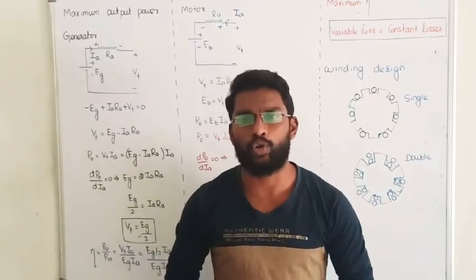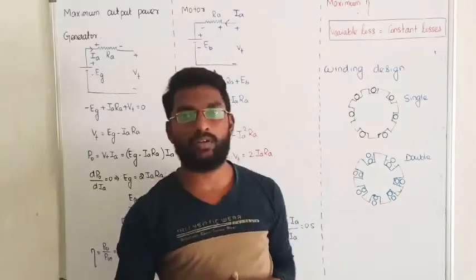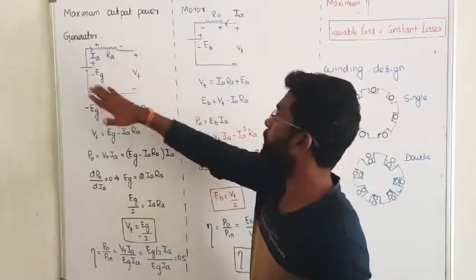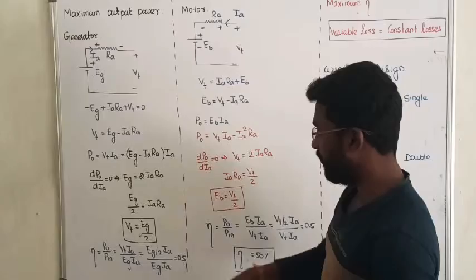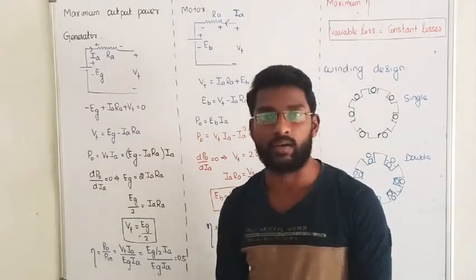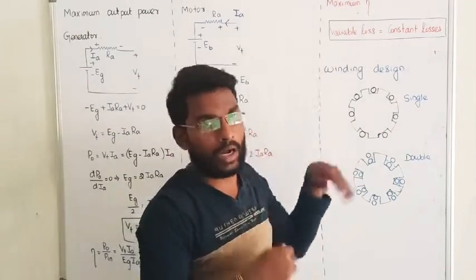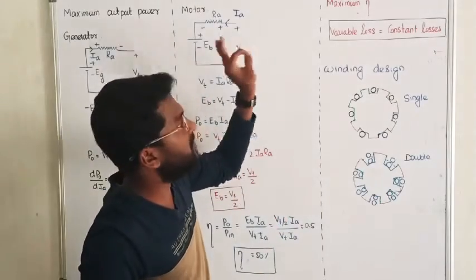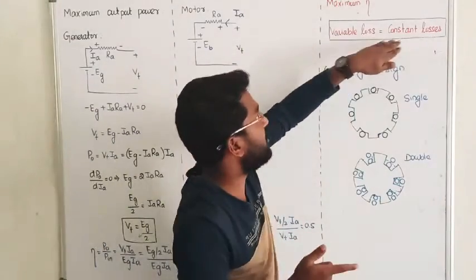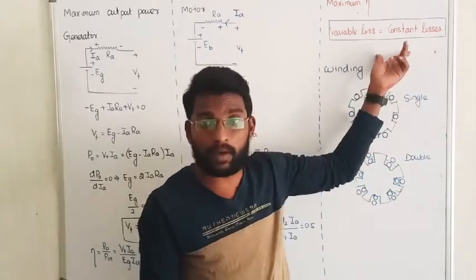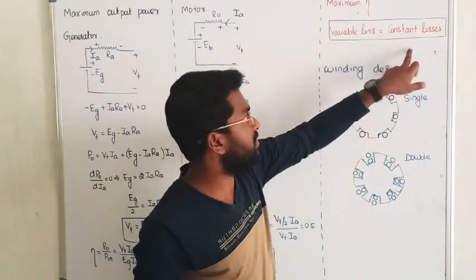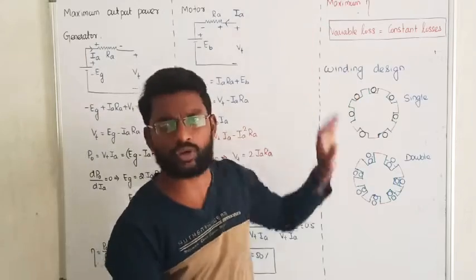Next is the condition for maximum efficiency. This concept was discussed in the transformer topic as well. When we talk about maximum power output, we were simply trying to transfer maximum power to the output zone, and efficiency was only 50%. If instead we want to maximize the efficiency of the machine under operating conditions, we must make the constant losses equal to the variable losses. This concept is fixed — whenever we want maximum efficiency, constant losses must equal variable losses.